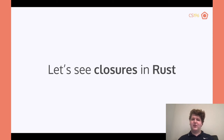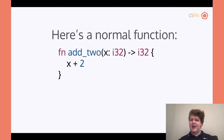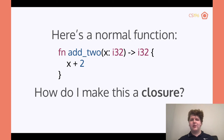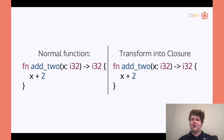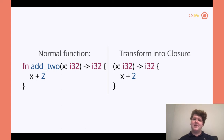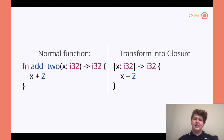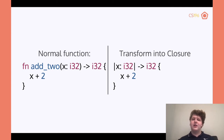Here's a normal function — just a function that will take in a number, add to it, and return it. So how do we make this a closure? The simple answer is to start by removing the name and the 'fn' keyword. We know it's some sort of function, and because it's anonymous we don't need to give it a name. Then we add these vertical bars — these bars tell us this is an anonymous function instead of a typical function where you have parentheses.